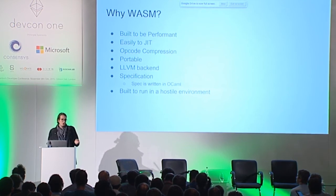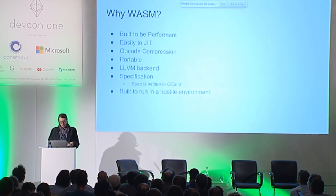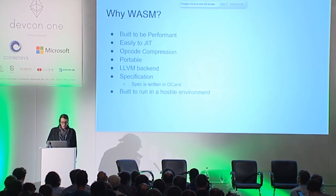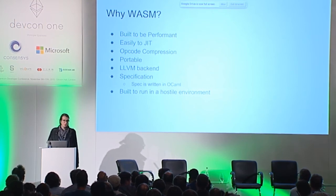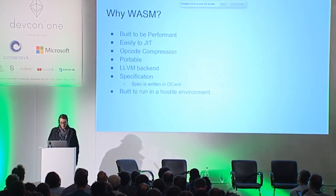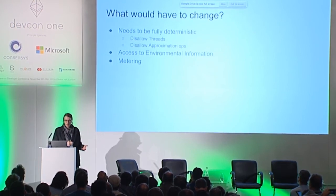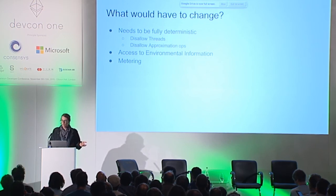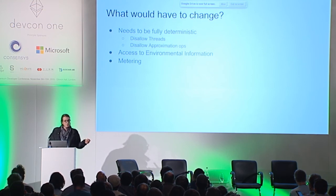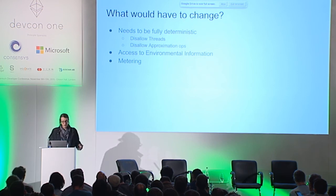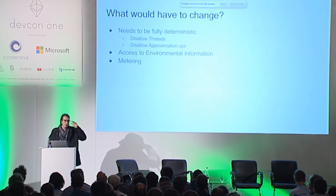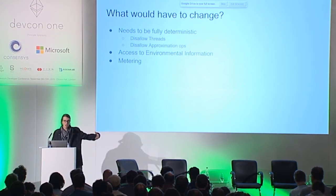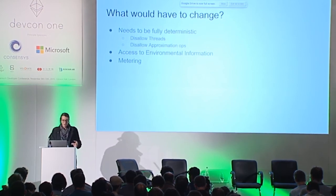WebAssembly is portable — it should be easy to run on many different architectures. It already has an LLVM backend, meaning you can compile anything that LLVM can compile and target WebAssembly. The specification is pretty clear and they're working on a formal specification. It's built to be run in a hostile environment. To modify WebAssembly to work on a blockchain or Ethereum-like environment, it needs to be fully deterministic. WebAssembly already does a pretty good job of isolating non-deterministic behavior — you'd just need to disable threads and a few operations that use hardware-based approximations. You'd also need to add access to environmental information, like getting block hash and other blockchain state, and you'd need to add metering — that's a big one.